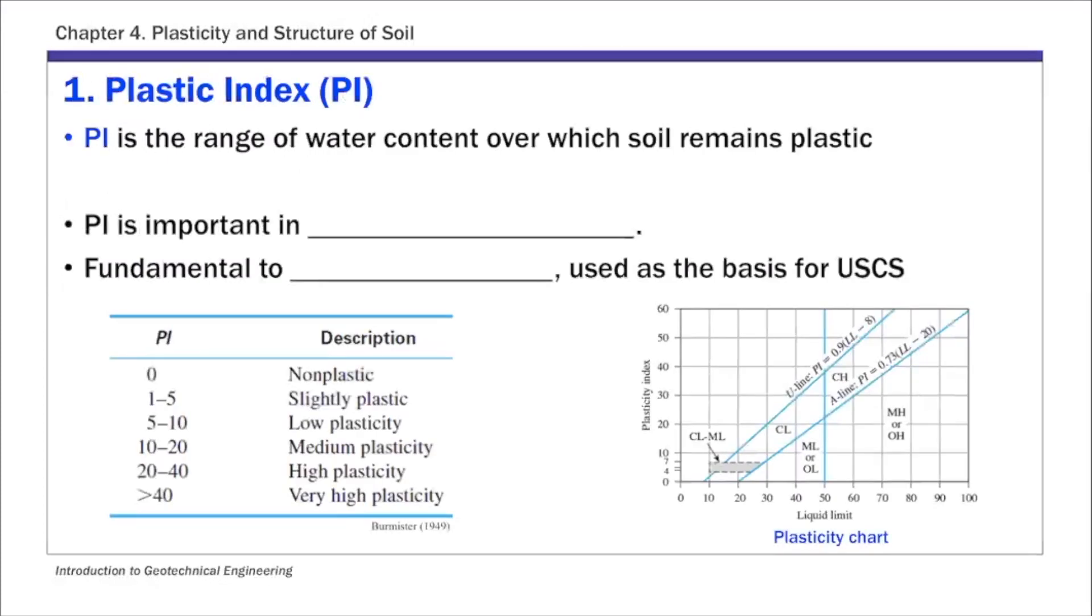The first index is called plastic index or PI. The plastic index is basically the range of water content over which soil remains plastic. So it's calculated using two Atterberg limits: LL minus PL.